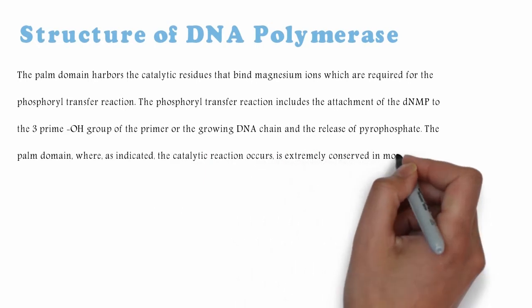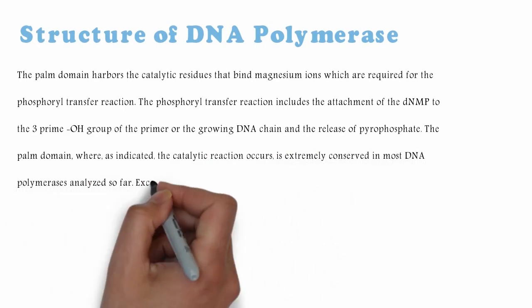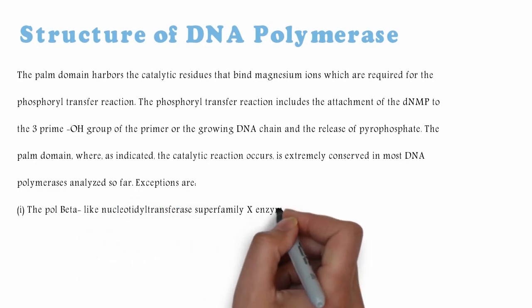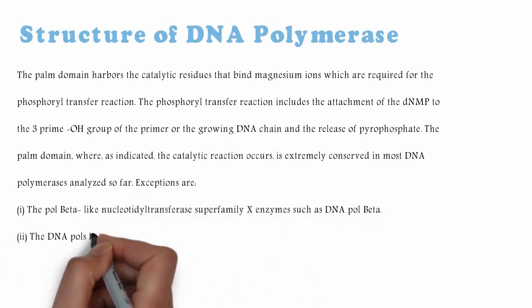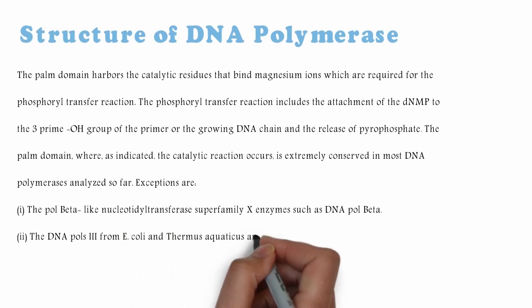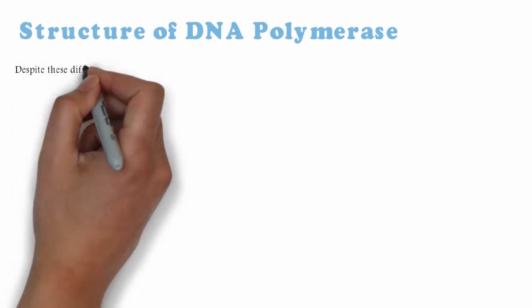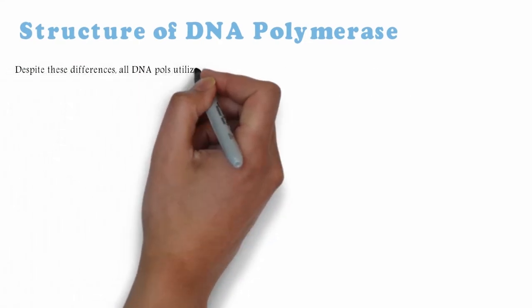The palm domain, where the catalytic reaction occurs, is extremely conserved in most DNA polymerases analyzed so far. Exceptions are: (i) the pole beta-like nucleotidyl transferase superfamily X enzymes such as DNA pole beta; (ii) the DNA poles 3 from E. coli and Thermus aquaticus; and (iii) the DNA pole X from Deinococcus radiodurans.